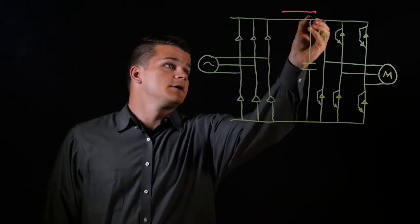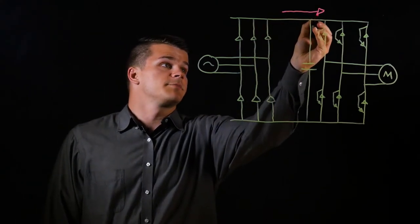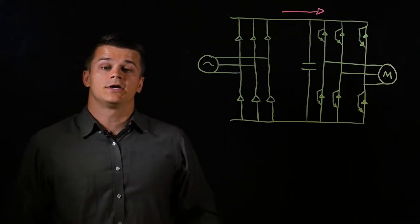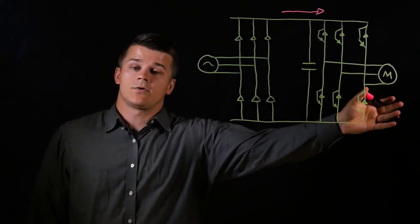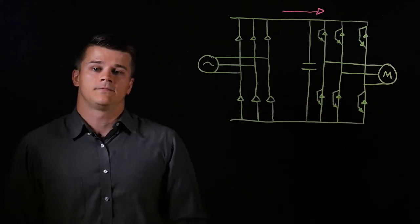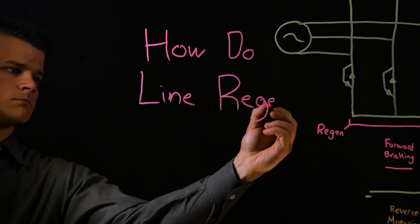In a standard VFD, this is a one-way street for current and power. In this video, we'll talk about how a line regen unit is used when a motor generates power back towards the VFD. How do line regen units work?